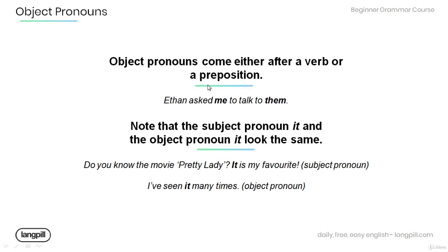For example, in this sentence: 'Ethan asked me to talk to them,' the object pronoun 'me' comes after the verb 'asked,' and the object pronoun 'them' comes after the preposition 'to.'